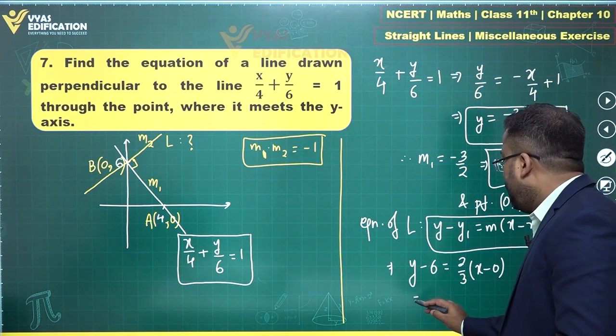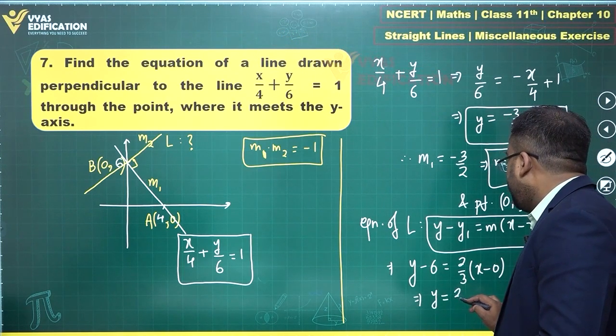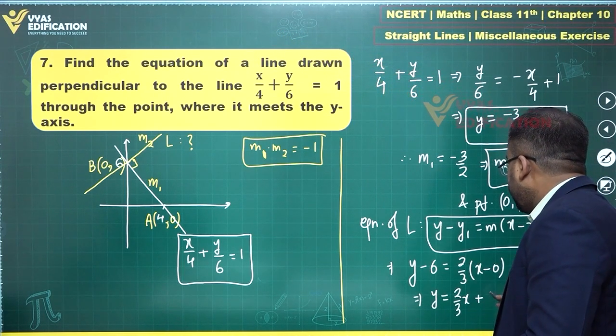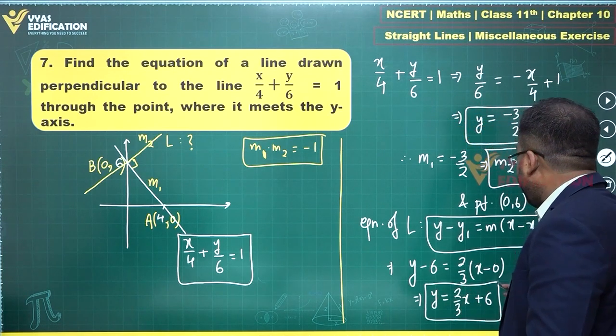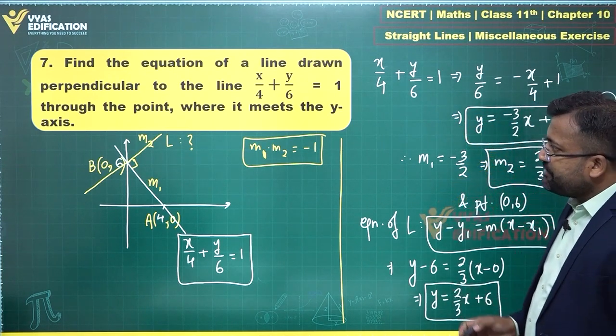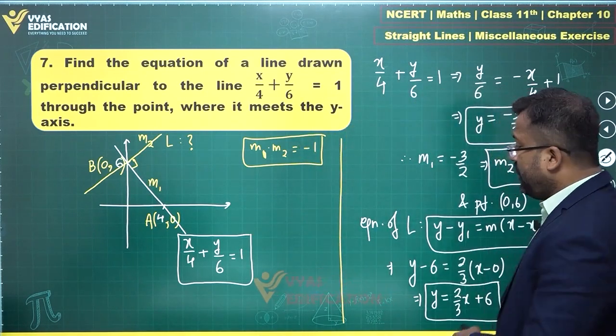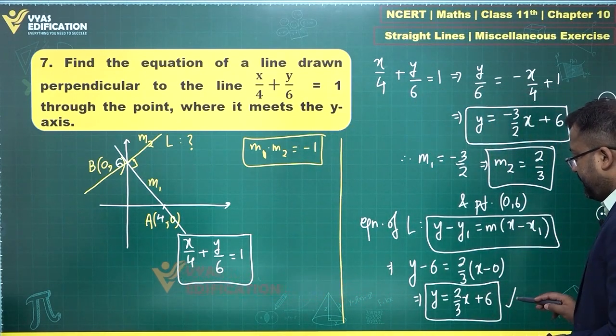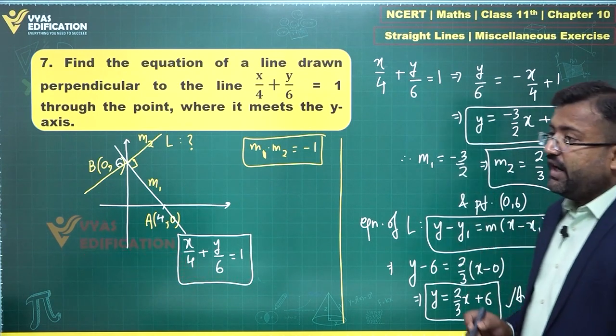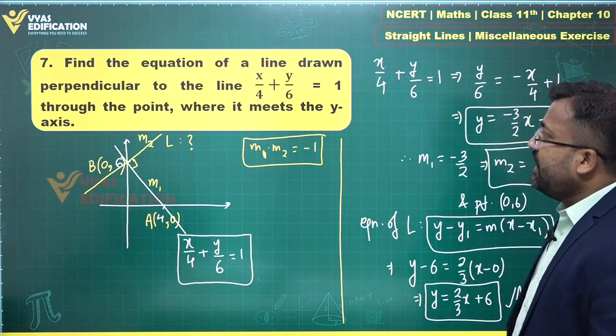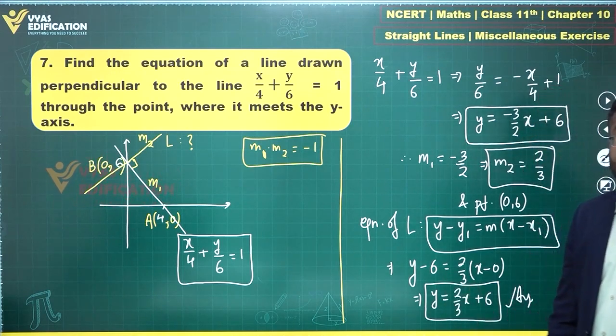This gives y = 2/3 x + 6 in the form y = mx + c. You can directly observe that once you get the slope, this is the y = mx + c form. That's the answer in that particular form for this required line. This is the seventh question for us.